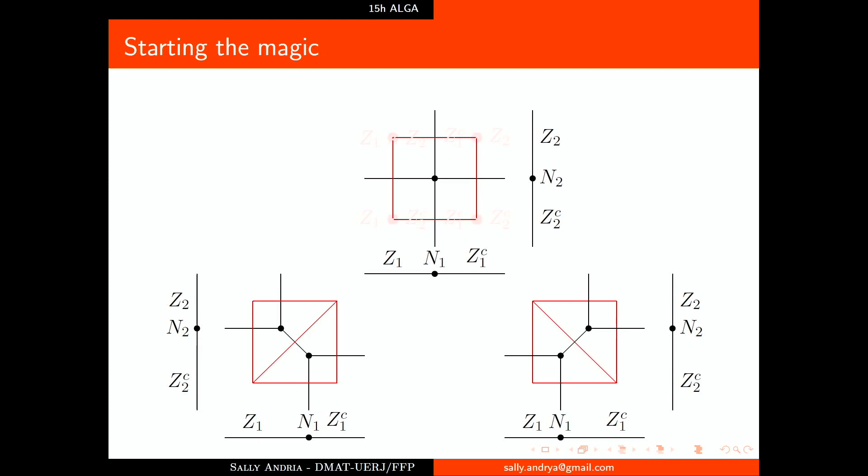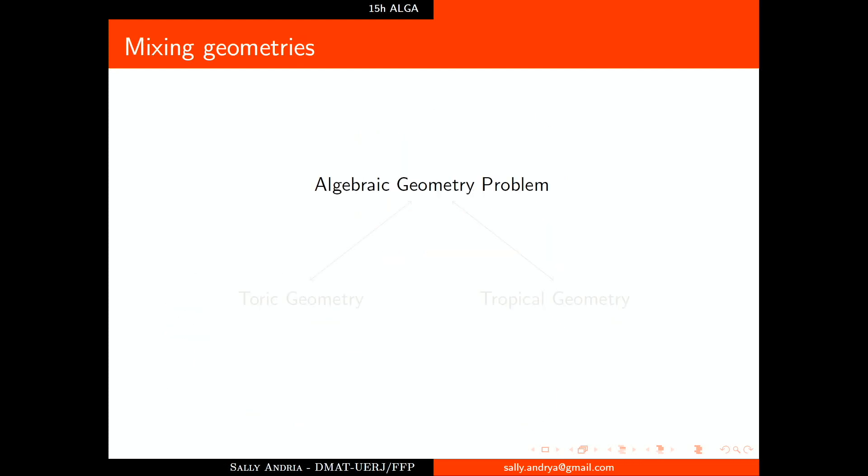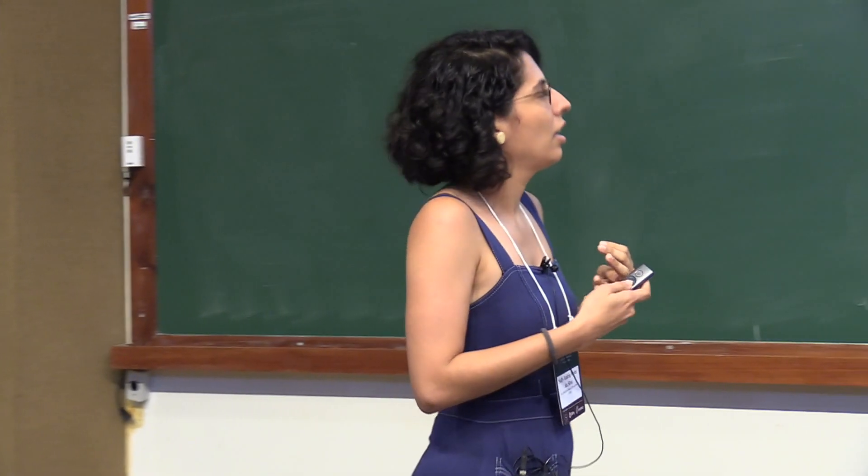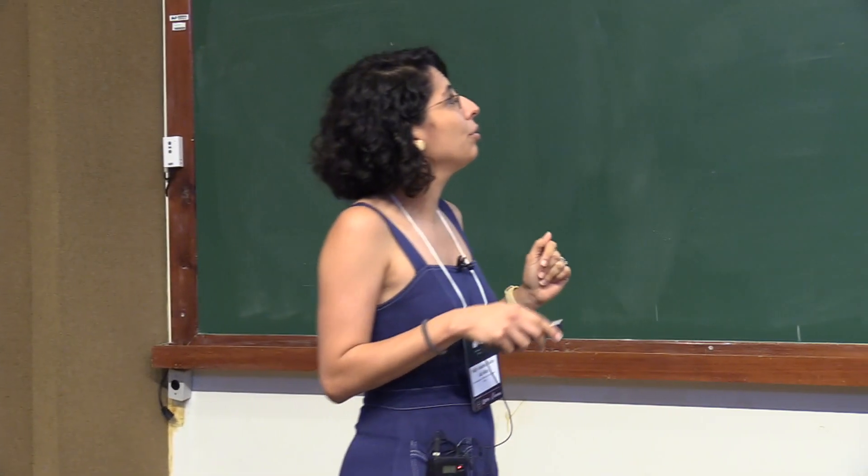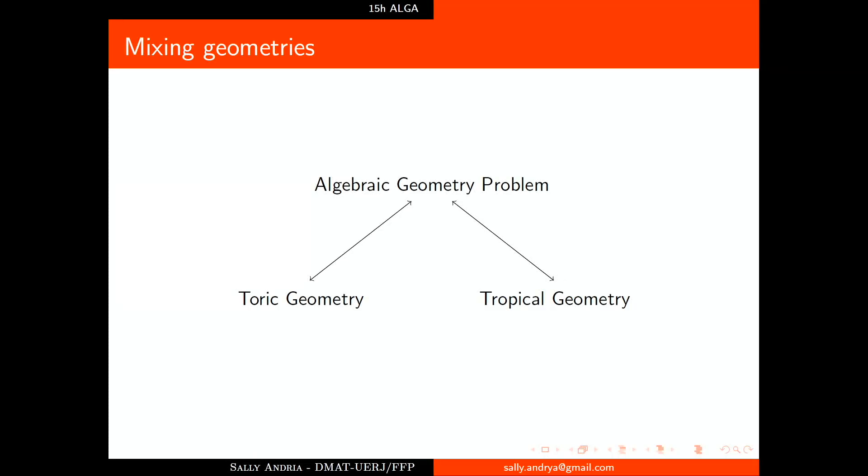So what we are doing here: we have an algebraic problem and we relate this with toric geometry. Now we want to build a bridge to tropical geometry.